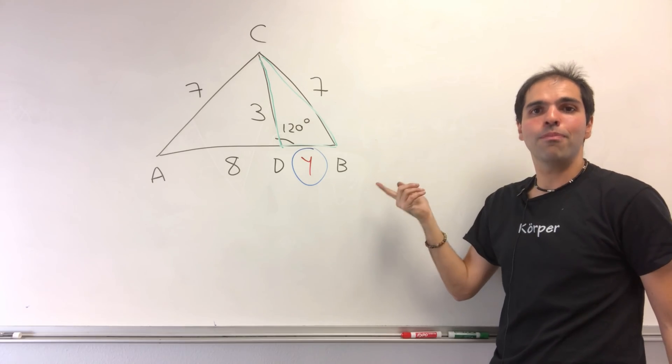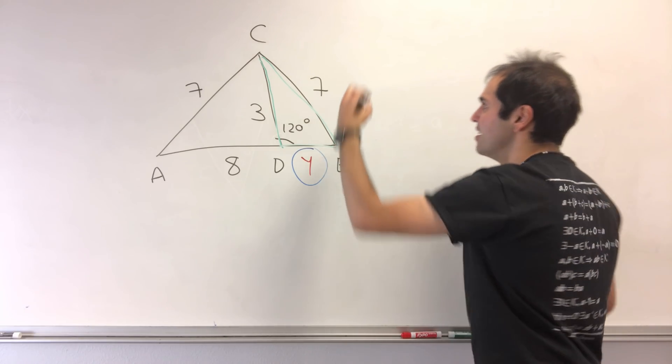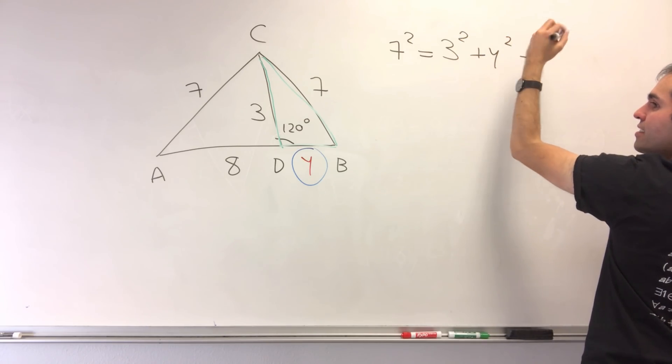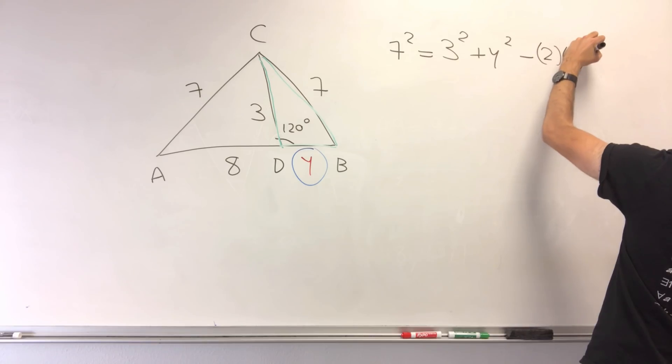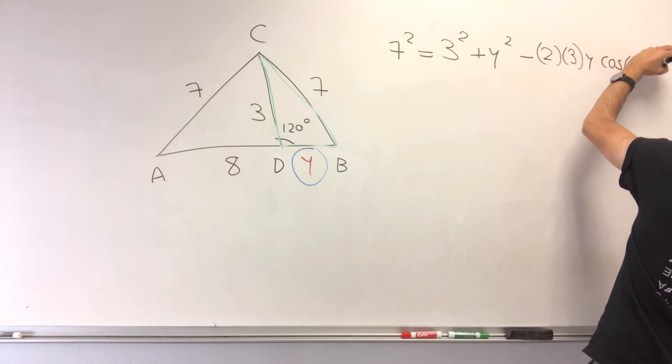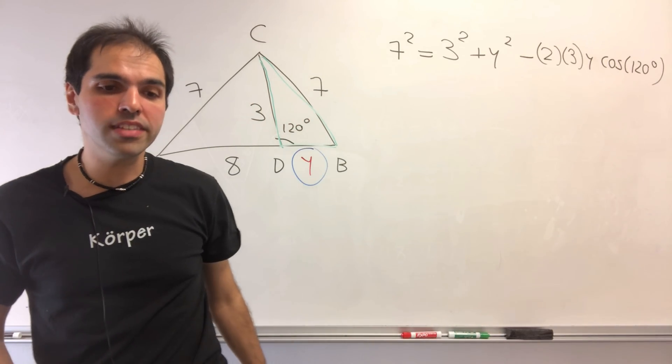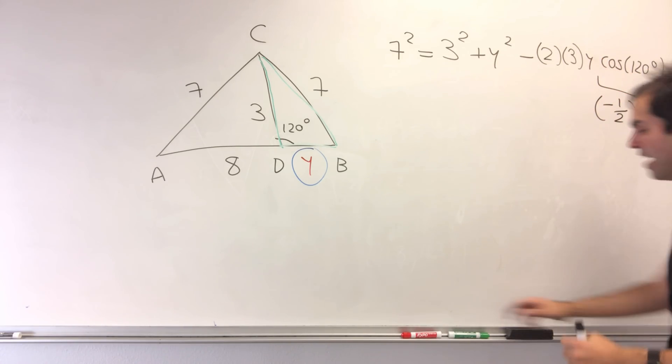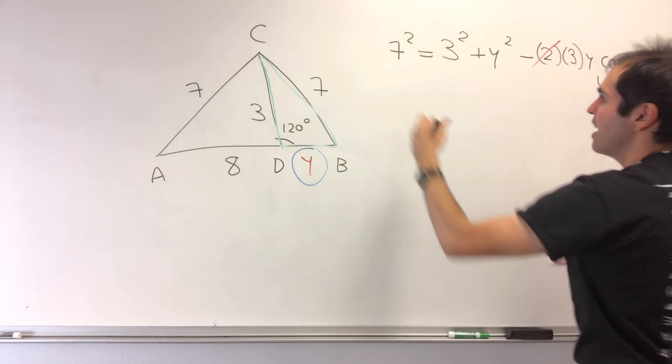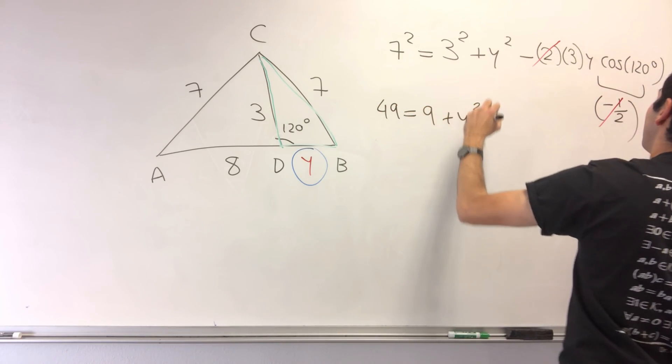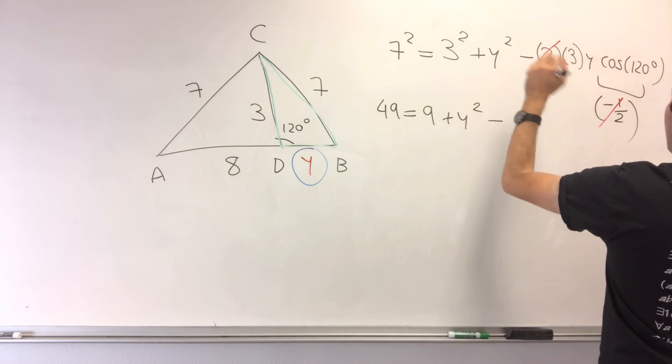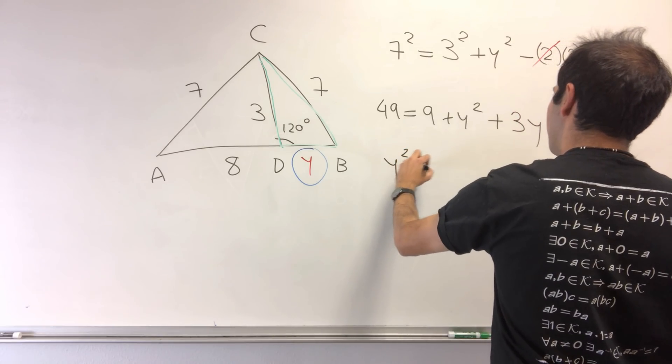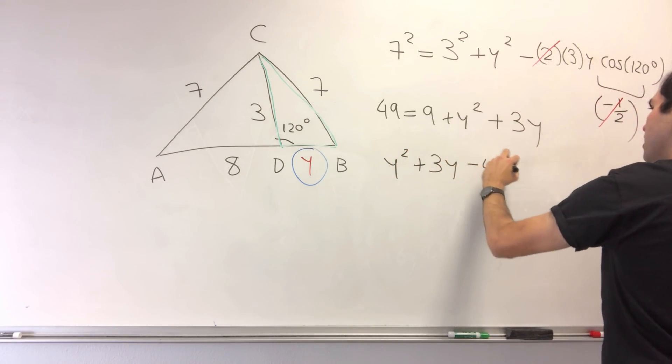Let's solve this problem using the law of cosines. We get 7² = 3² + y² - 2(3)(y)cos(120°). But cosine of 120 degrees is -1/2, which cancels out with the 2. Essentially we get 49 = 9 + y² + 3y, which simplifies to y² + 3y - 40 = 0.